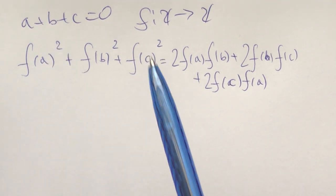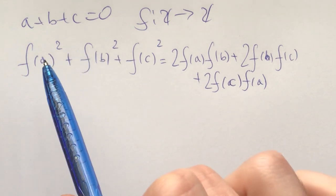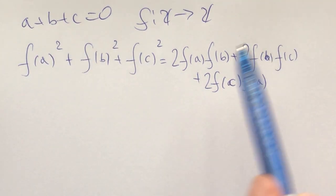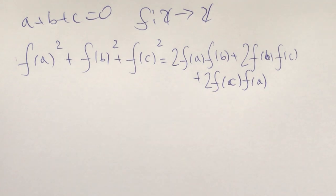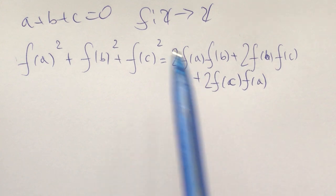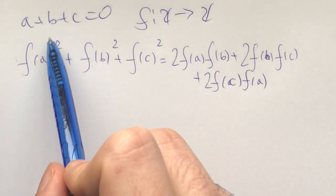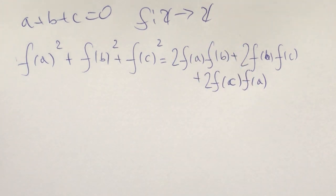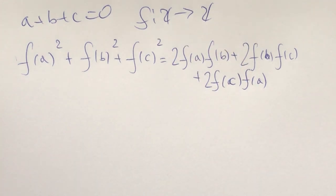The thing I see here at a high level is that every variable has an f around it — there are no variables without f's. Now this immediately brings up the solution f(x) is identically zero. You might also notice that this functional equation is homogeneous in terms of the powers of f: we have f squared here and f squared here as well. With that in mind, let's start plugging stuff in.